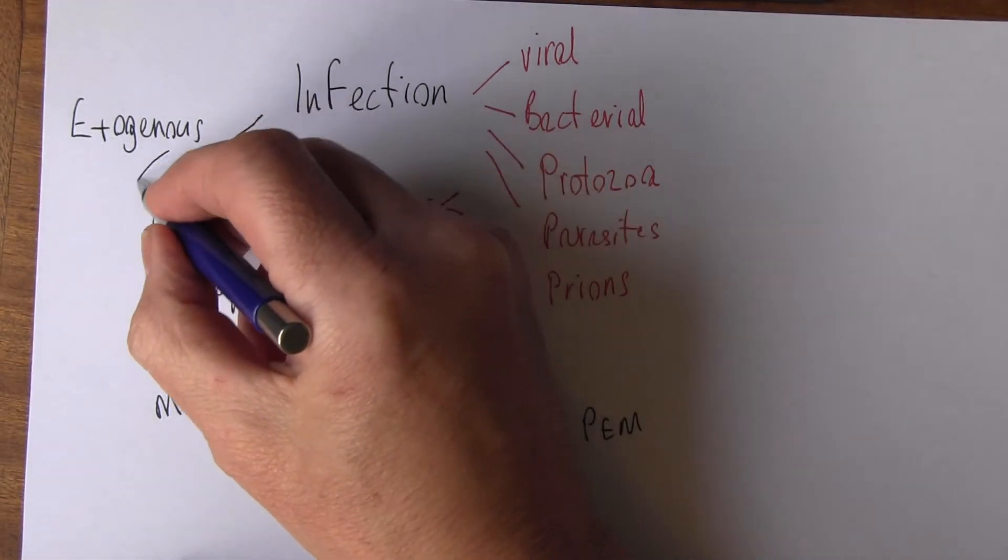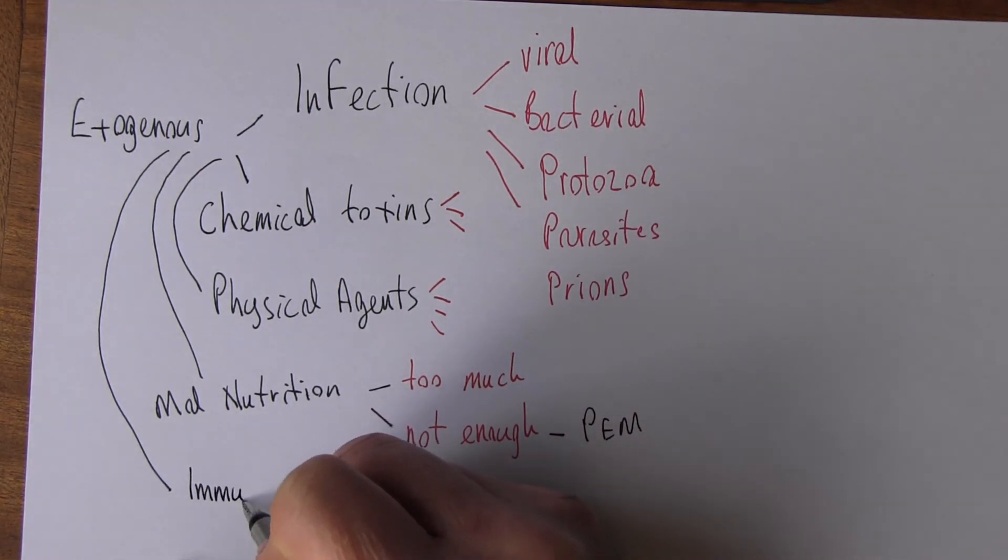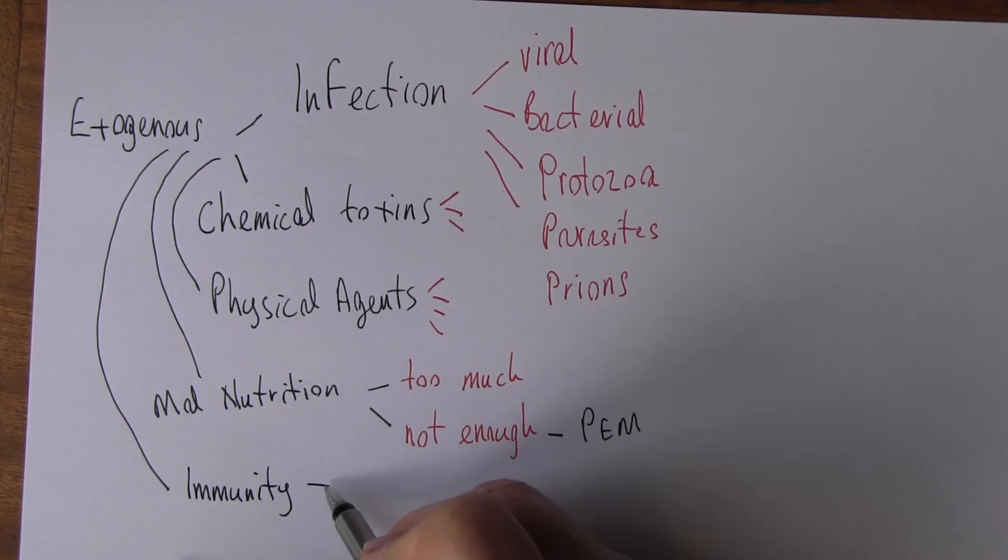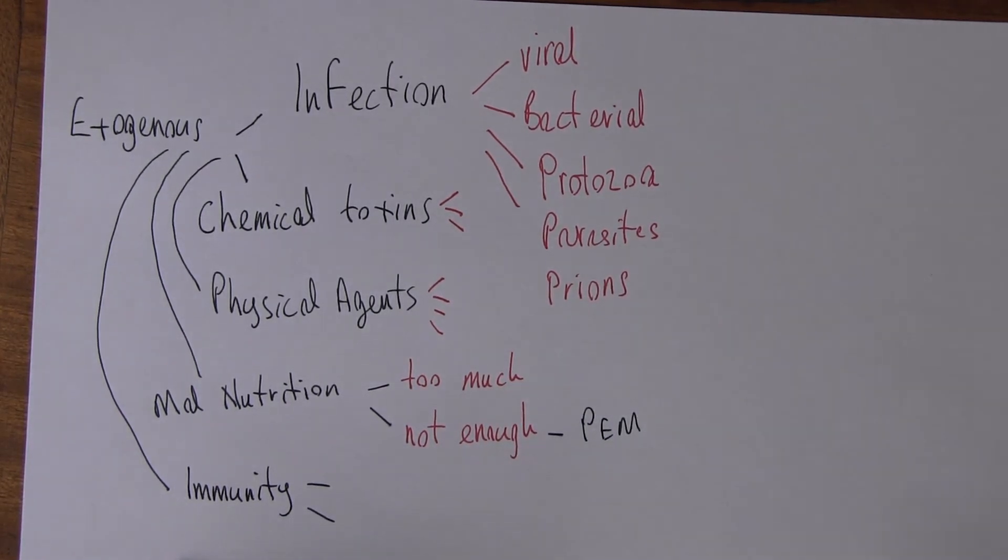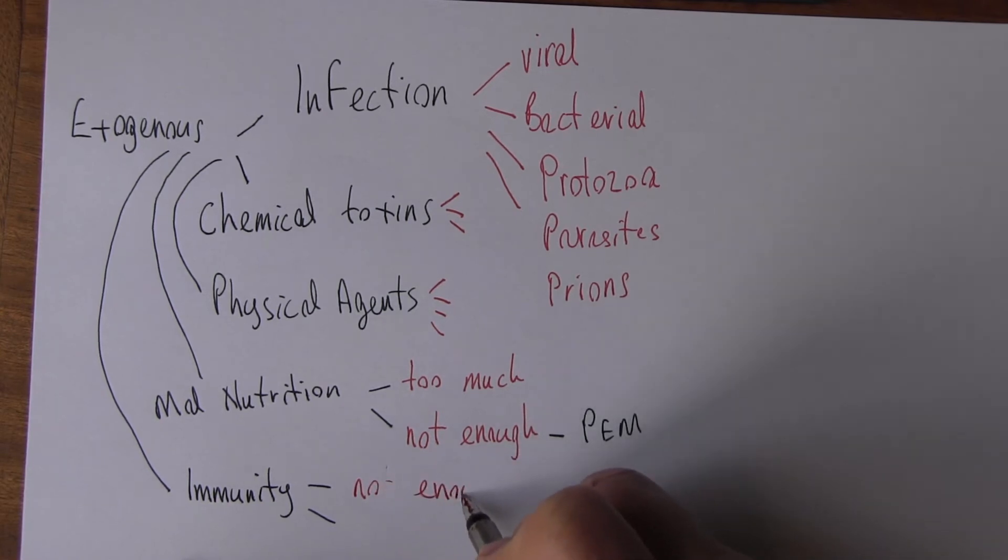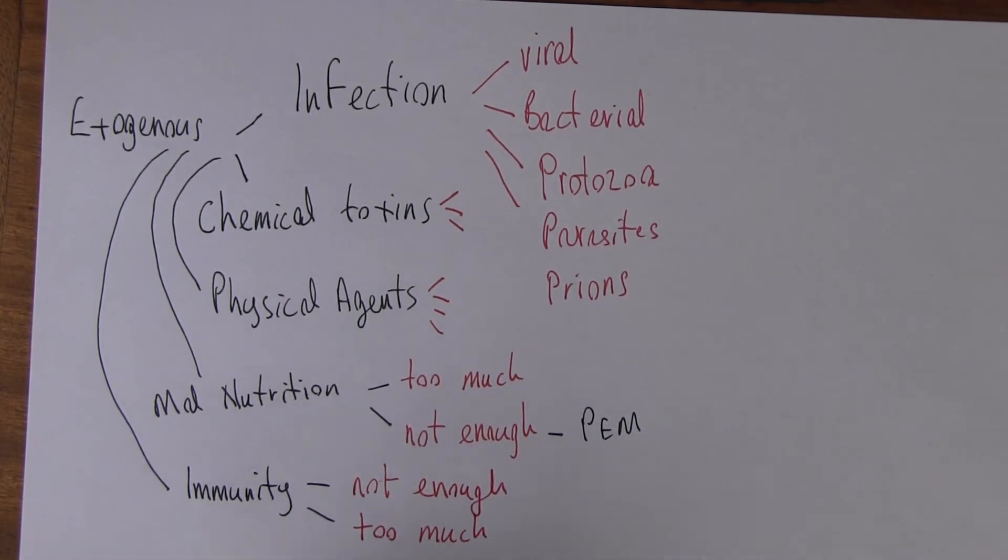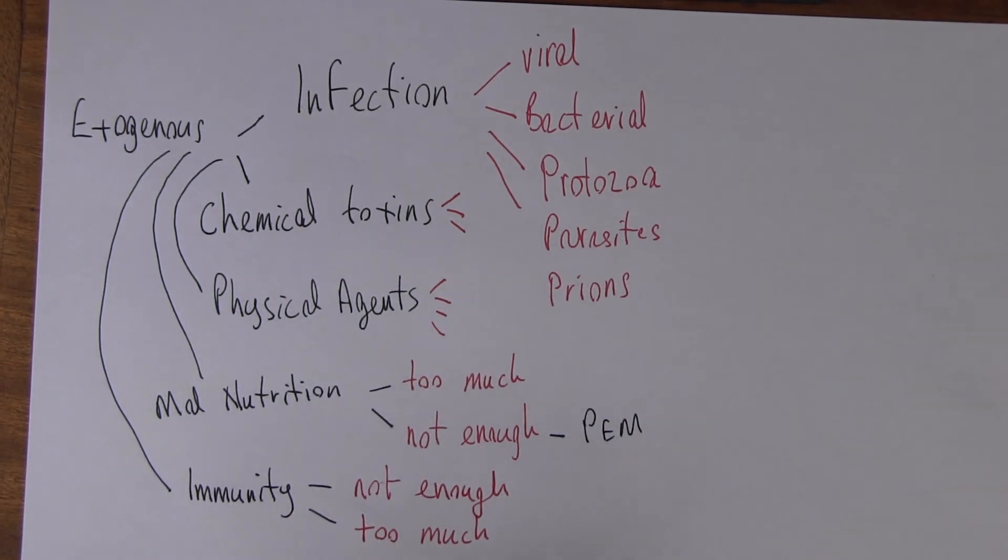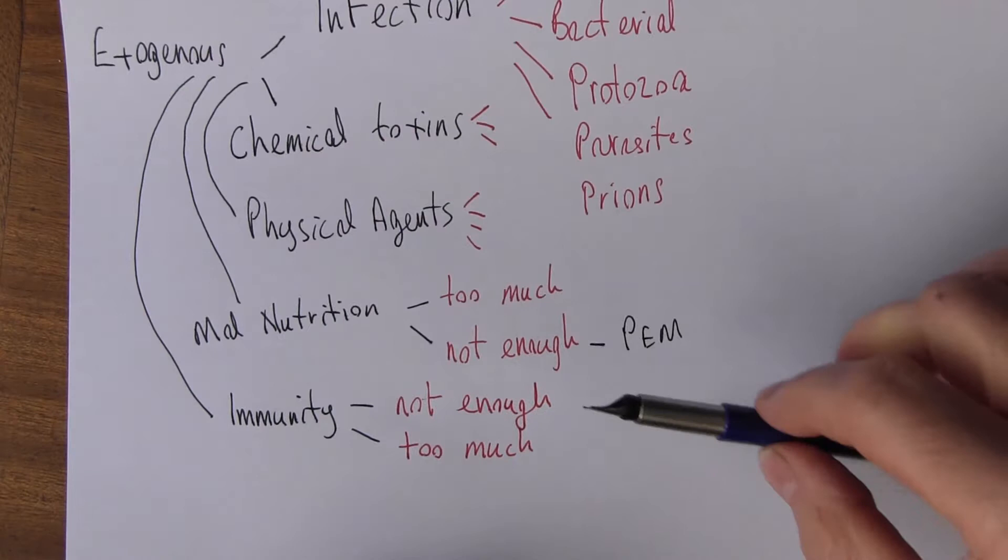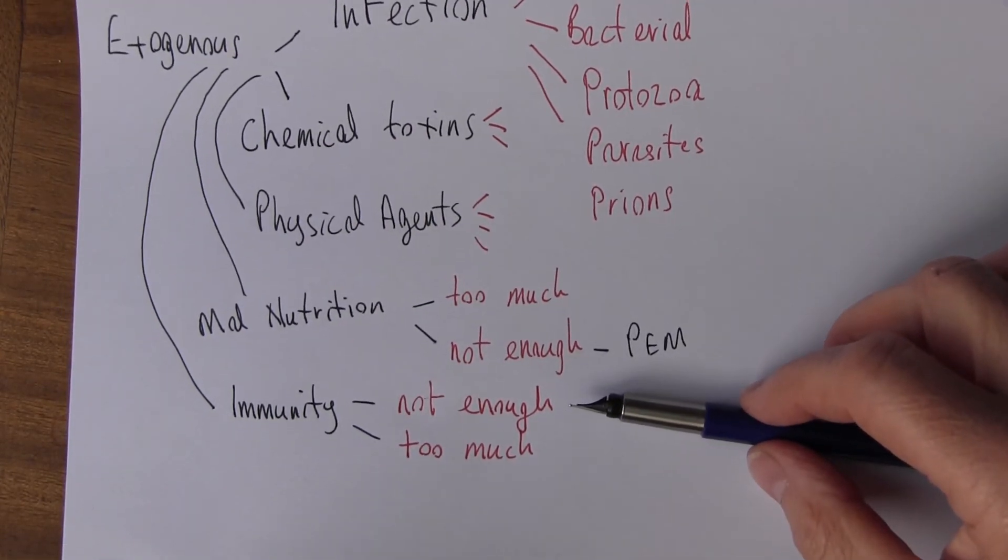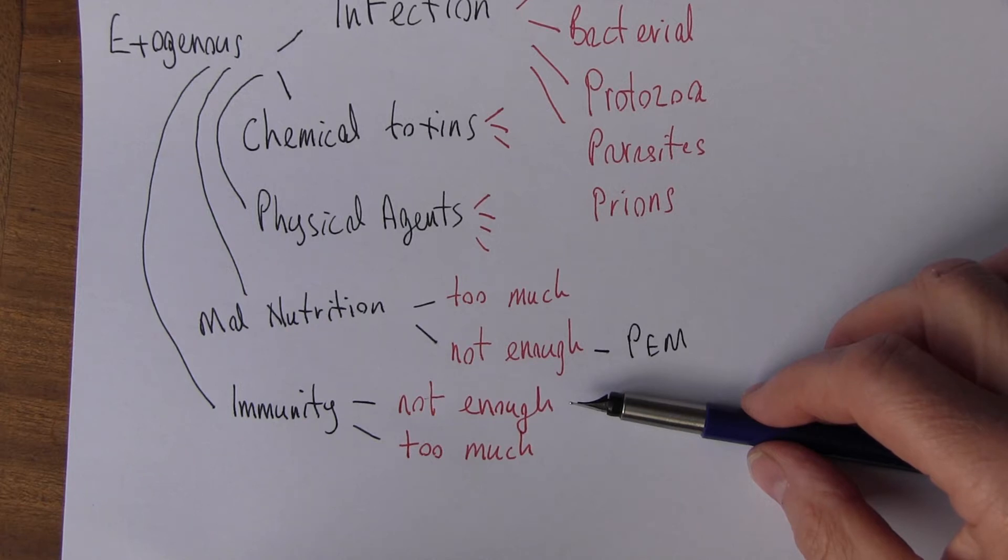Now another group of causes is disorders of immunity. And again here with immunity, it's quite possible to think of immunity where there's not enough immunity or too much. Now what do we mean by this? Well, not enough immunity is going to lead to immunosuppression, immunocompromise, where a person is predisposed to infection. You might think of human immunodeficiency syndrome caused by the acquired immunodeficiency syndrome caused by the AIDS virus, the HIV virus. Human immunodeficiency leading to death from actual infections.